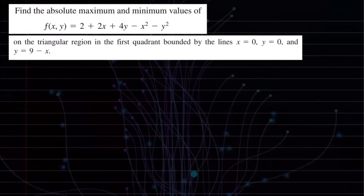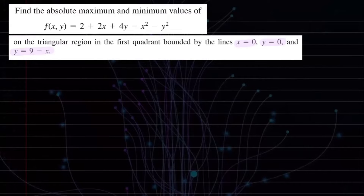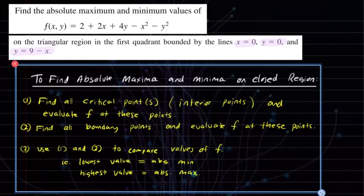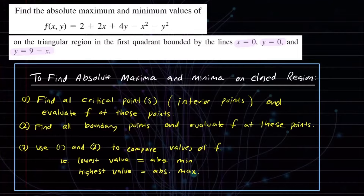In this video, we're going to work out a problem where we find the absolute maximum and minimum values of a two-variable function on the triangular region in the first quadrant bounded by these curves. I'm going to share steps that you'll follow when looking for absolute max and min of a function — steps that will be useful to run through as you work through problems like this.